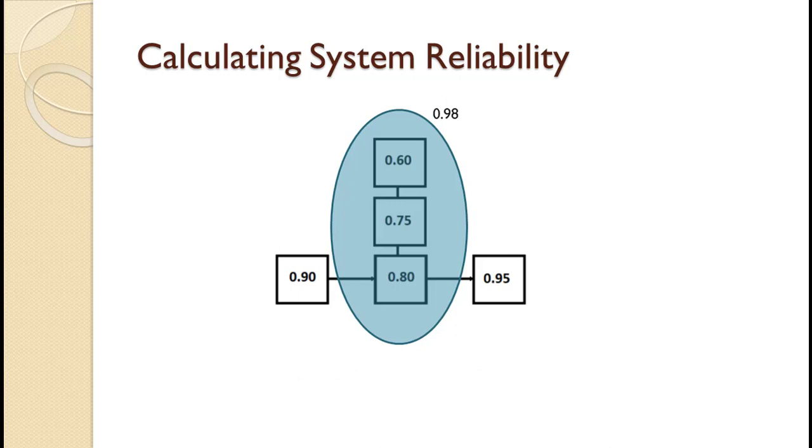We have now converted the system reliability problem into a series reliability problem, and we already know how to handle that. Multiplying the three series component reliabilities together gives us a product reliability of 0.838.